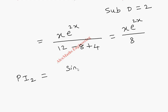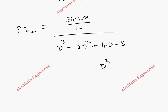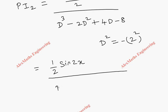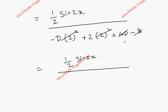For particular integral 2, we have sin 2x by 2 divided by d cubed minus 2d squared plus 4d minus 8. As per the procedure, d squared is replaced by negative 2 squared, i.e., minus 4. The numerator is half sin 2x, and the denominator: d cubed is written as d times d squared, so d times minus 4 gives minus 4d; minus 2 times d squared gives minus 2 times minus 4 which is plus 8; plus 4d; minus 8. The 4d terms cancel and 8 minus 8 gives 0, so the denominator is 0.